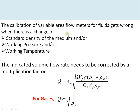Calibration of variable area flow meters can go wrong when there is a change in density of the medium. If the meter is calibrated for water or air and then used for another medium, there is an error that must be corrected with correction factors. Changes in density, working pressure, and working temperature — especially for gases — affect the flow reading. The indicated volumetric flow rate must be corrected by a multiplication factor whenever any of these three parameters change.